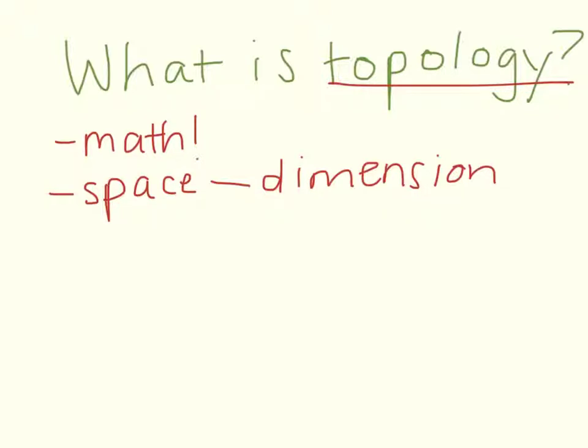For instance, in a two-dimensional space, you need an ordered pair, such as this, to designate a specific point in that space.